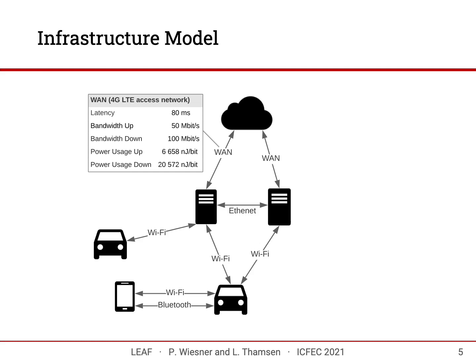The infrastructure model of LEAF is based on graphs where each node represents a compute node or device — whether a single sensor or an entire data center. Edges between nodes represent communication links, which can be anything from Ethernet to wireless standards or wide area network links. There can also be multiple links between two nodes, representing multiple possible ways of communication. Each node and link have certain properties and resource constraints — compute nodes are constrained by processing power and optionally memory, while network links are constrained by bandwidth, with additional properties like latency and reliability available for routing policies.